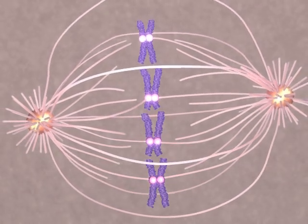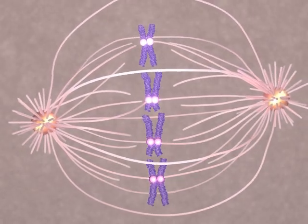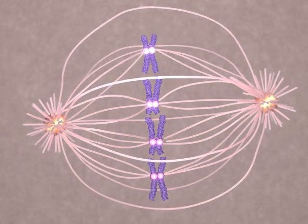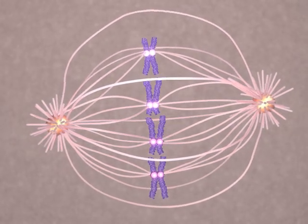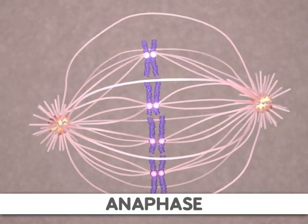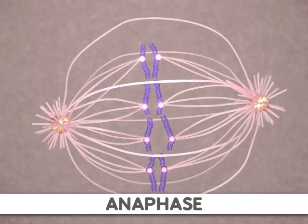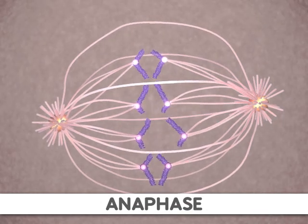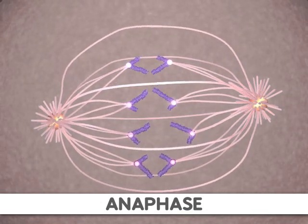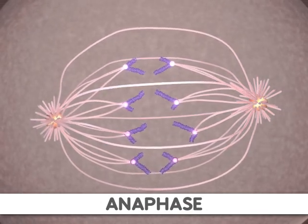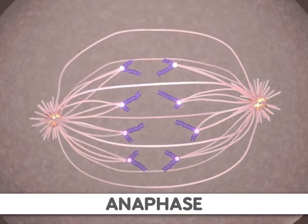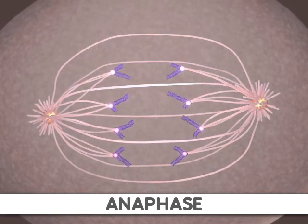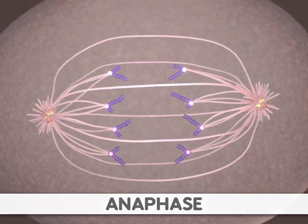This occurs during anaphase through a shortening of the microtubules attached to the kinetochores. Additionally, the poles of the cell move farther apart, causing increased separation of sister chromatids. At the end of anaphase, the sister chromatids have moved to the two ends of the cell.